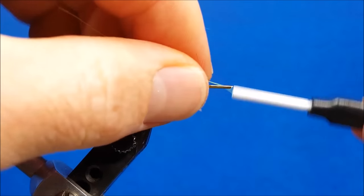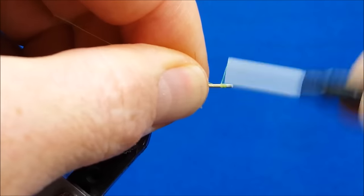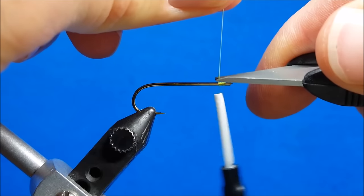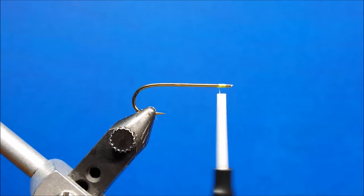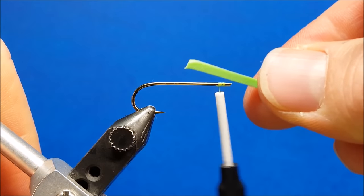For this extended version body of the beefcake hopper, I'm going to start with a few thread wraps on the end of a straight shank streamer hook that I've clipped the eye off of. We're going to come in with a 1 1/8 inch wide strip of foam.